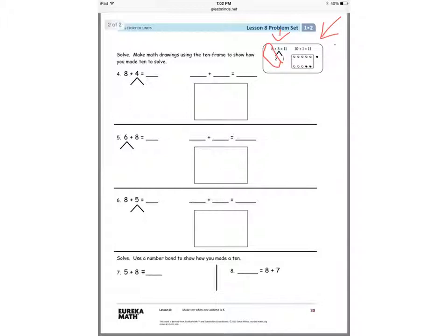Your new number sentence would be 10 plus 1 equals 11. You'll draw your picture to match your number sentence.